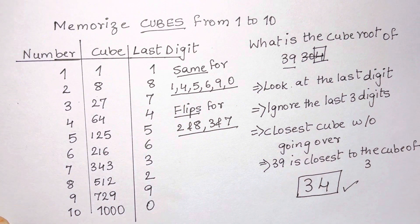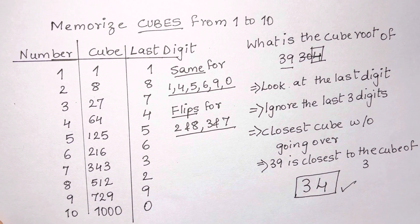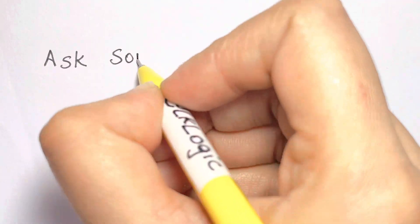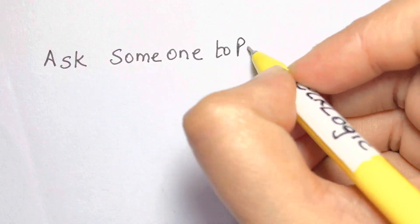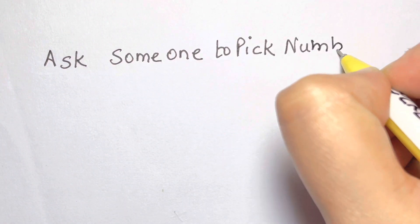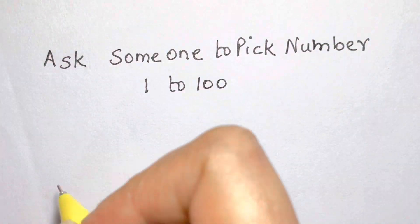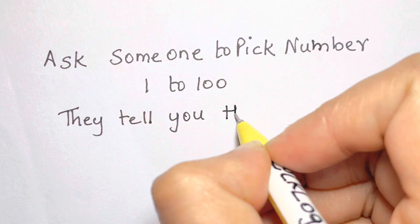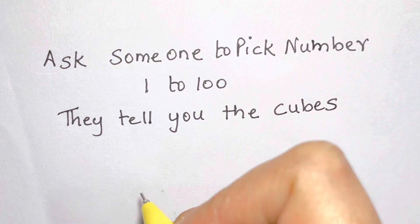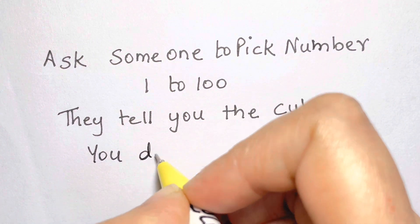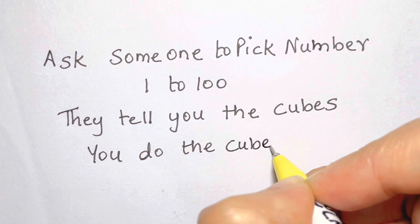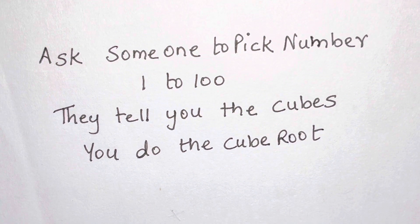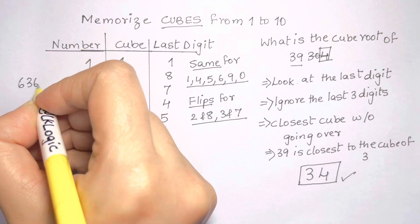So why would this ever be useful? Here's a trick you can do: ask someone to pick a number from 1 to 100 and just think about it secretly, don't have them tell you the number. Have them cube the number on a calculator. Once they cube the number they tell you the cube, and you instantly can tell them the cube root by using this table and using this trick.